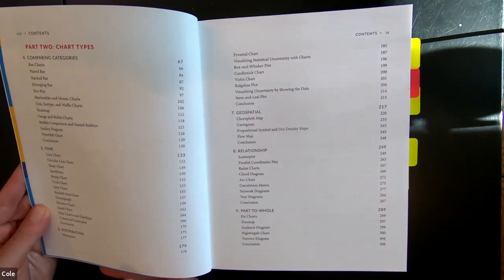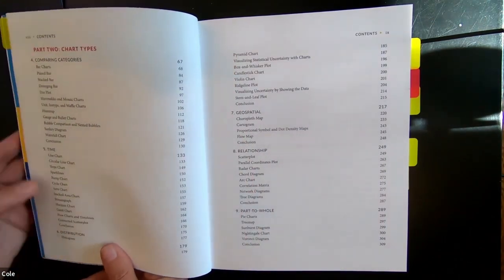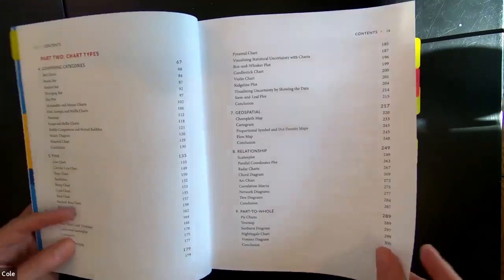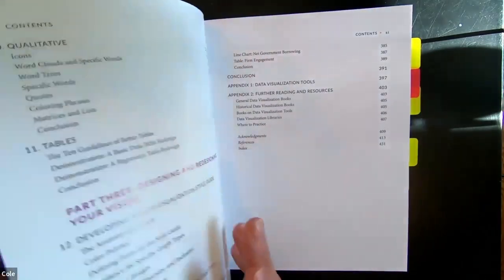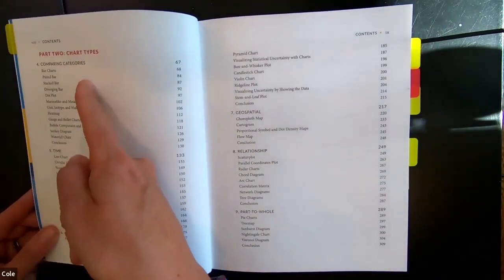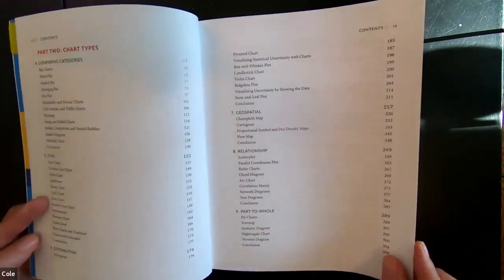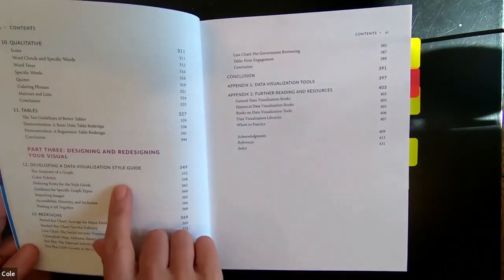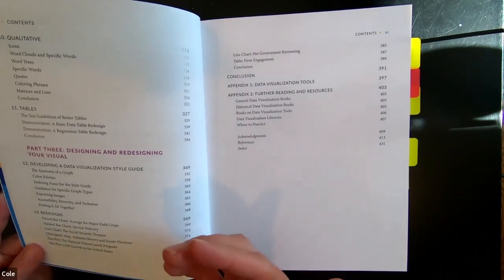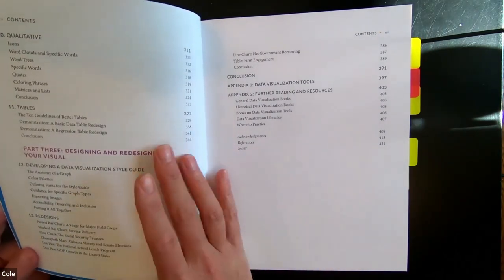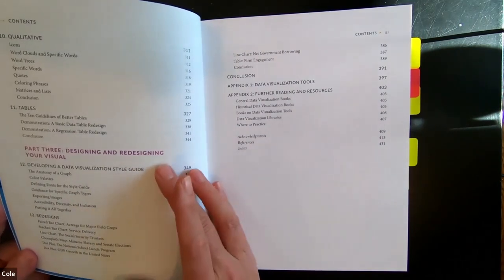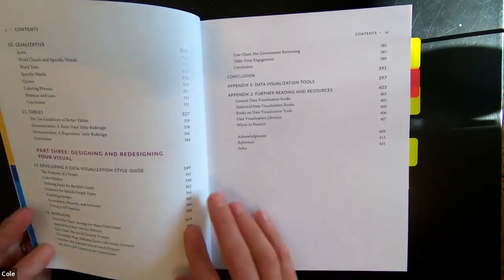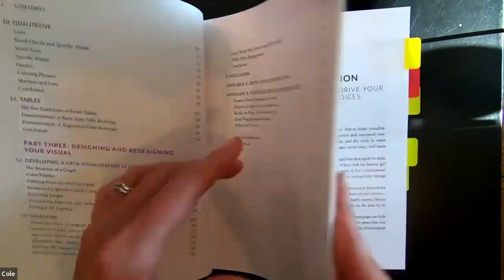And then the real meat of the book is part two, chart types. So it's organized by what you might want to do with your graph. Comparing categories, time, distribution, geospatial, relationship, part to whole. This continues - qualitative data, tabular data. And within each of these, you can see there's a plethora of different types of graphs. Part three is designing and redesigning visuals. Actually, I think chapter 12 is one of my favorites of the book, mainly because I've never seen this content written out before. A really pragmatic guide on how to develop and how to really think about and construct a data visualization style guide.